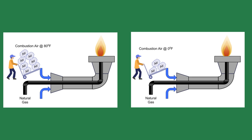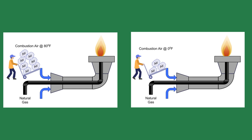When I'm adjusting the air to fuel ratio on a boiler or burner with combustion air vented to the outside, I sacrifice efficiency by a percent or two to be sure the boiler is operating with enough combustion air when it's warmer. That's what I suggested to this contractor.